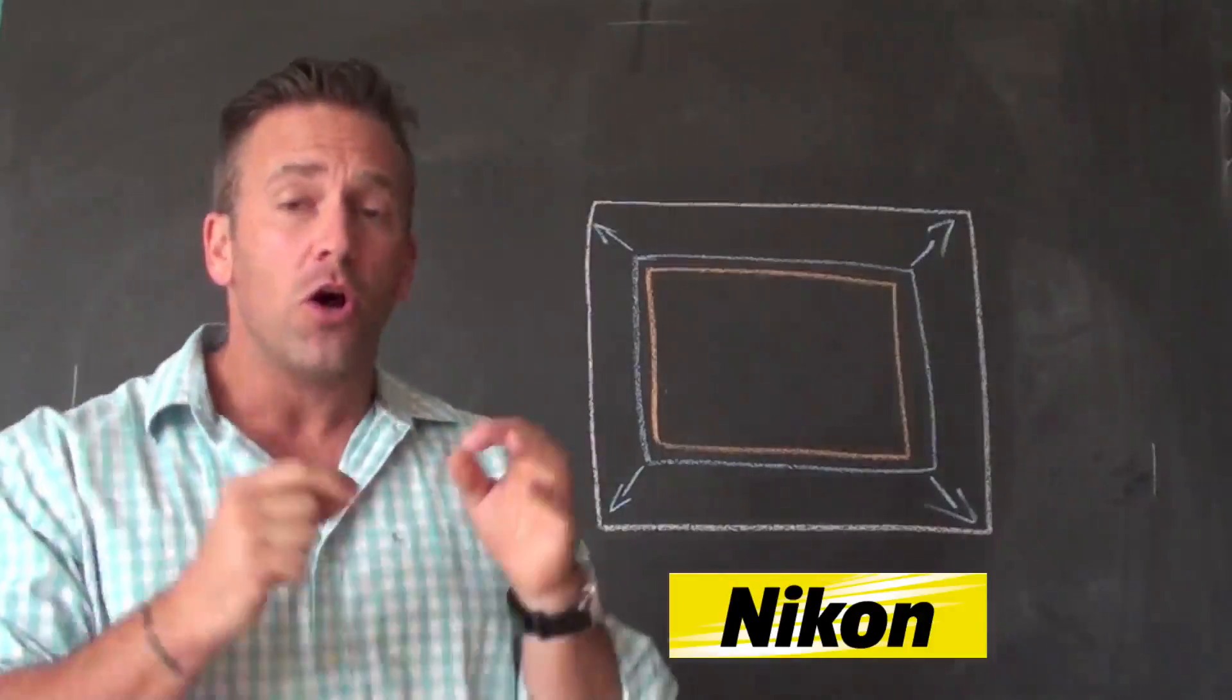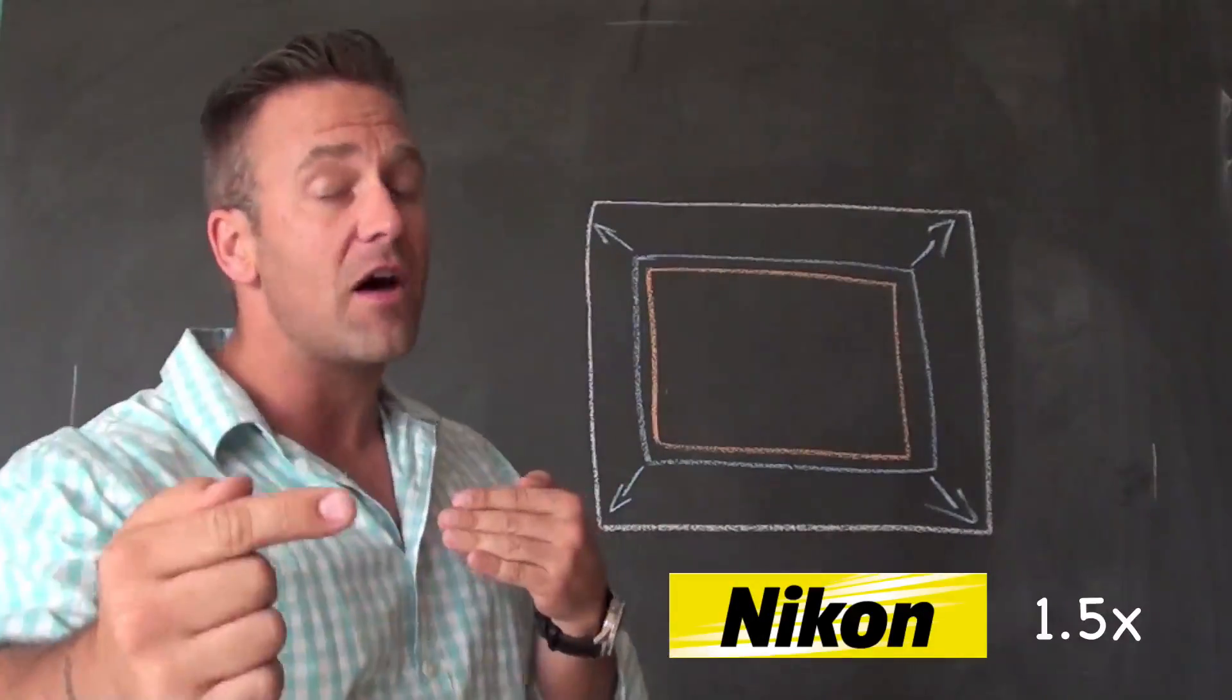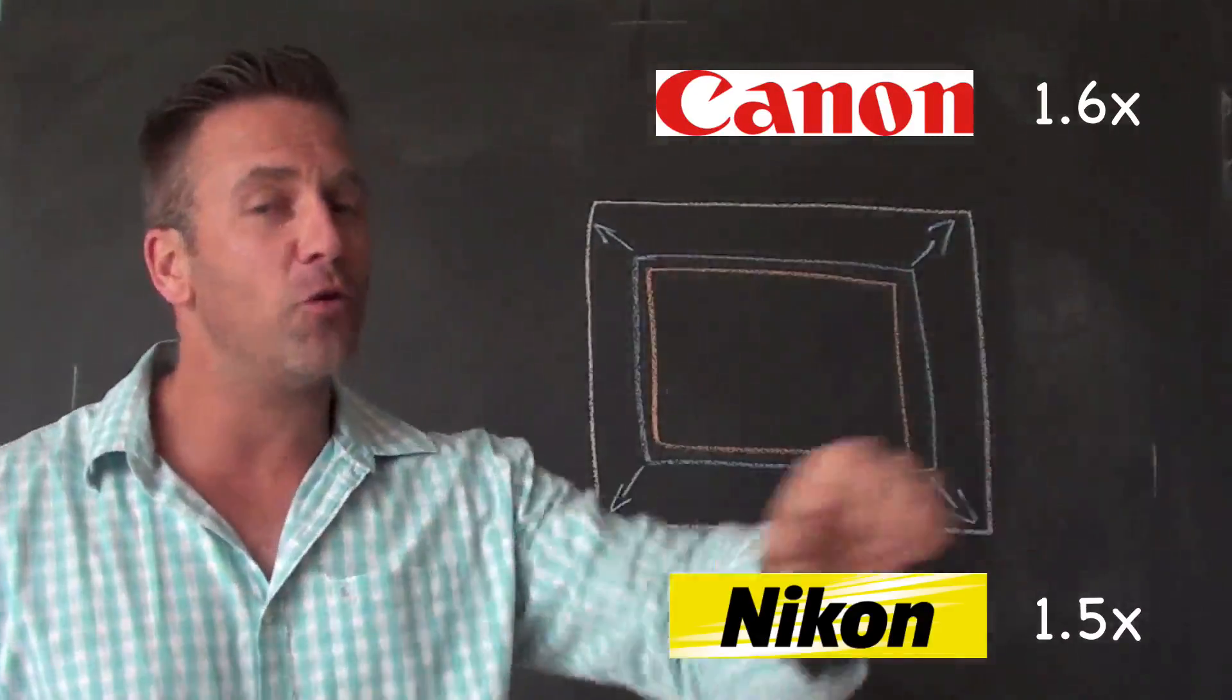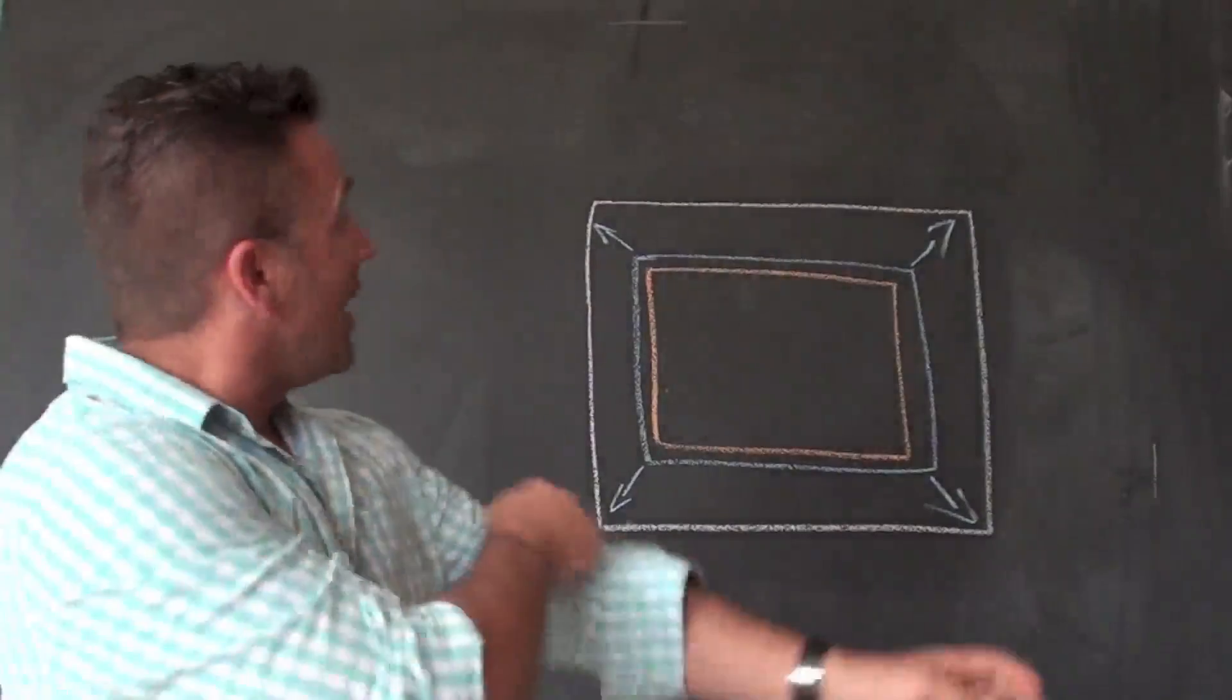Except for 1D4, which is 1.3. Email me if you have questions, we can look at this. So, the crop sensor, which one should you get?